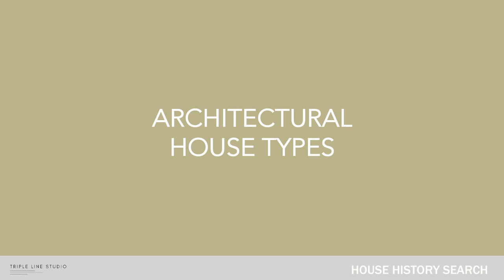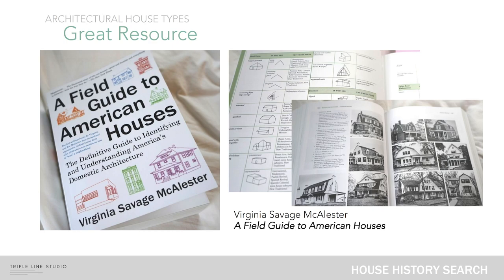On to our second topic: architectural house types and how to uncover your house's history. This is one of my favorite resources — it's called A Field Guide to American Houses by Virginia Savage McAllister. If you don't own this book and you do own an old home, I recommend adding it to your wish list or purchasing it. It is such an amazing resource for uncovering what your house may have looked like, what features might be new, and which ones were original. It's also a fun guide to use when you're walking around an older neighborhood.